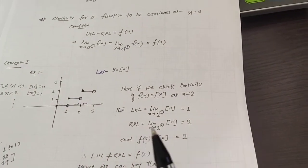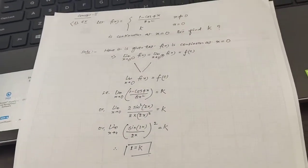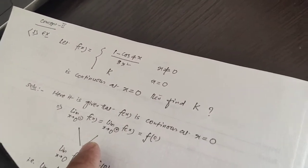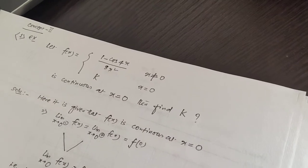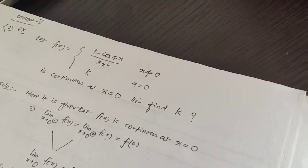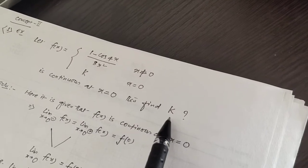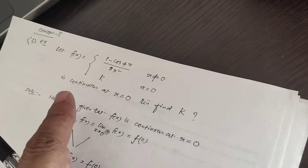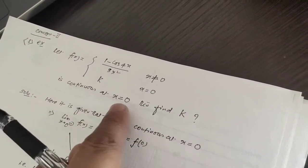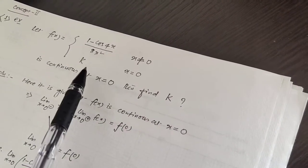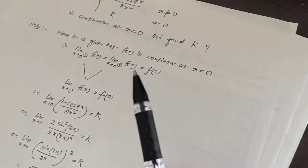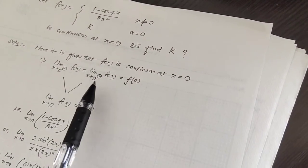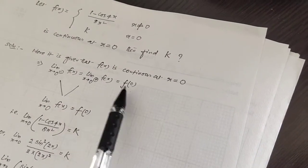Now we move to another concept — Concept Number 2. In this concept, a function is given and it is said to be continuous at x equals to some value, and we need to find an unknown constant. Here f(x) is given and it is continuous at x equals to 0. We have to find the value of k. Since the function is continuous at x equals to 0, the left-hand limit, right-hand limit, and the value of the function at x equals to 0 must be the same.